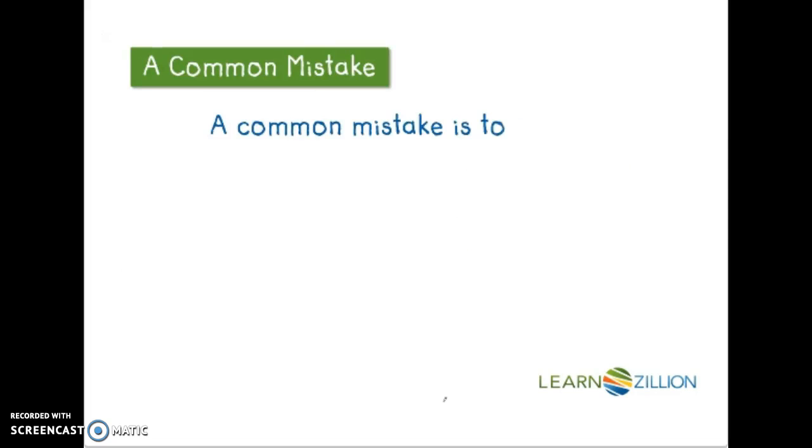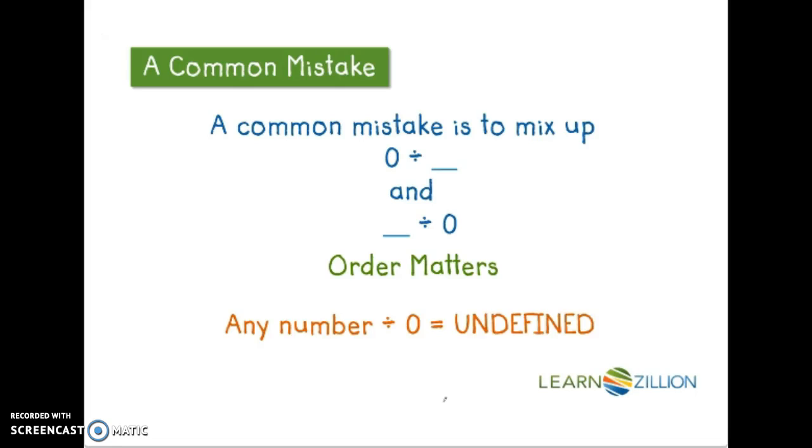A common mistake is to mix up 0 divided by a number and a number divided by 0. Order matters when we divide. You can take 0 objects and split them into groups and still have 0. But you cannot take a number of objects and split them into 0 groups. It's simply impossible. Any number divided by 0 is undefined.